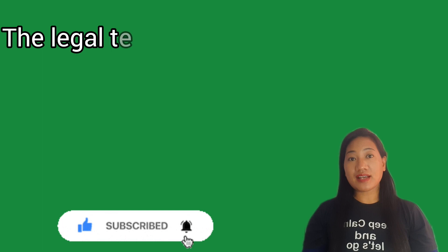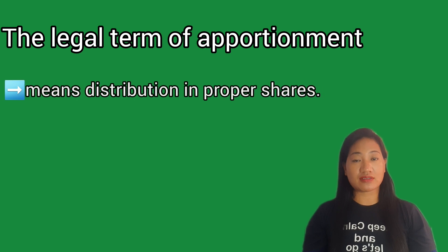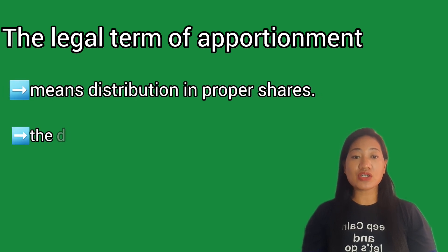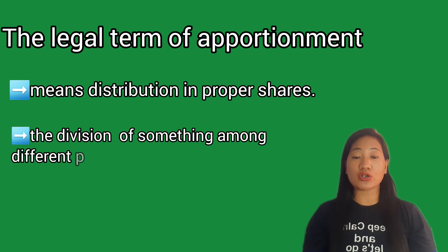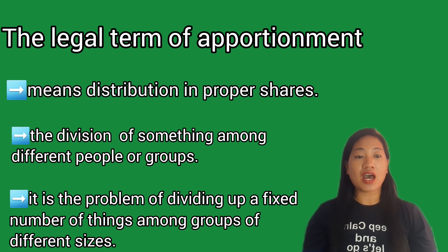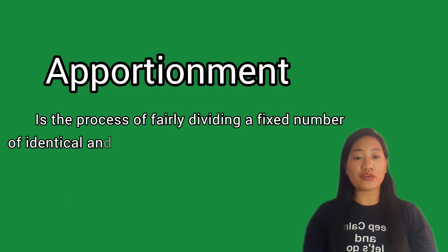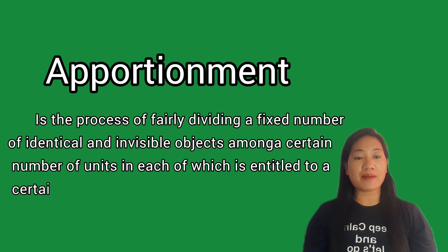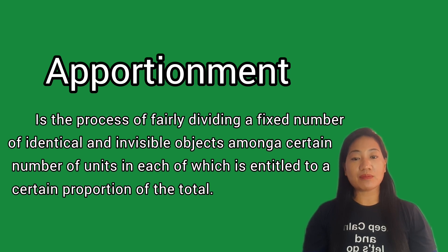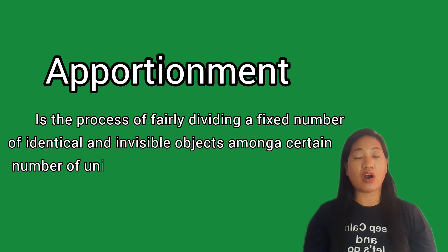Apportionment, in its legal term, means distribution of proportional shares. It is the division of something among different people or groups — the problem of dividing up a fixed number of things amongst groups of different sizes. So apportionment is the process of fairly dividing a fixed number of identical and indivisible objects among a certain number of units, each of which is entitled to a certain proportion of the total.